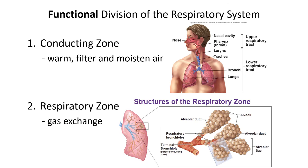We can also divide the respiratory system into two zones based on function. There's the conducting zone, which simply conducts air from the atmosphere down into your lungs and warms, filters, and moistens the air. Within the lungs, gas exchange occurs between the alveoli and the capillaries — this is referred to as the respiratory zone.